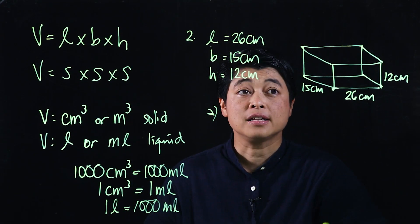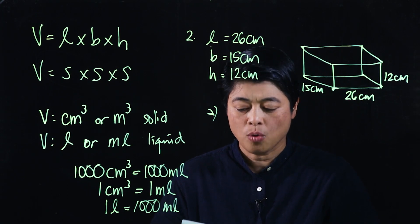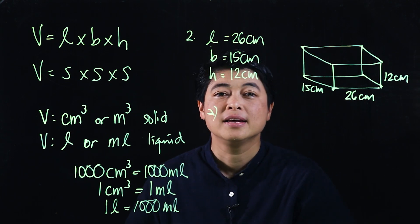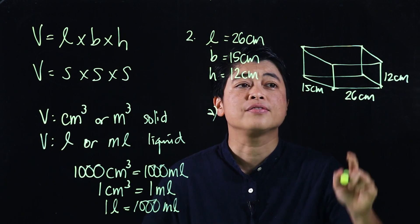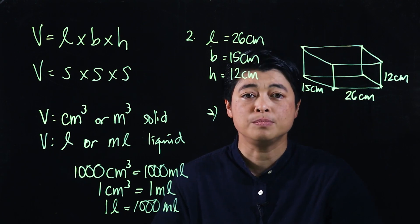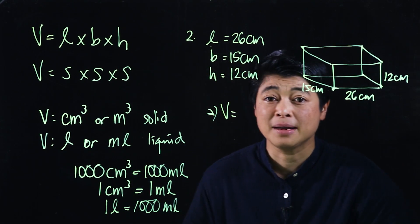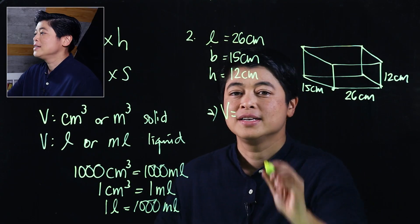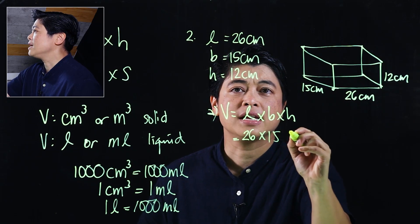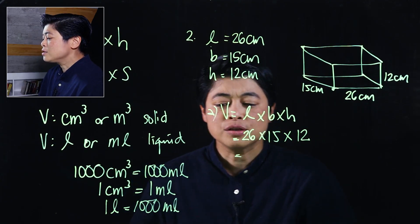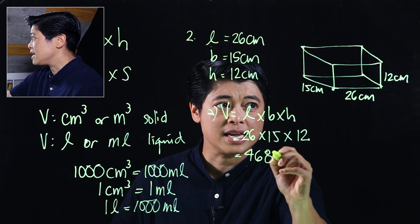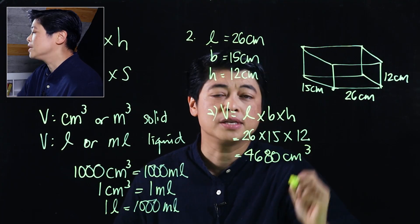Part (a) says find the capacity of the tank in cm³. The key to success: write down the formula — length times breadth times height. So this will be 26 times 15 times 12. Assuming the kids are allowed a calculator, this should be 4,680 cm³. That's the capacity of the tank.